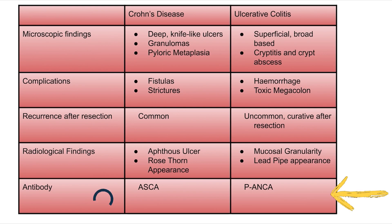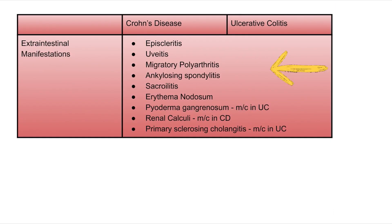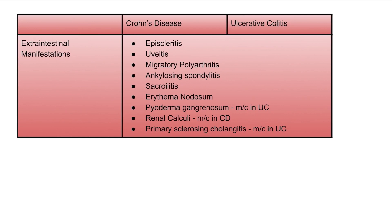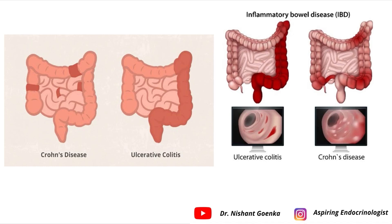Antibodies are another potential exam question: in Crohn's disease it is ASCA, and in ulcerative colitis it is pANCA. pANCA can also be found in Crohn's disease but at a very low percentage. Extra-intestinal manifestations common to both include episcleritis, uveitis, migratory polyarthritis, ankylosing spondylitis, sacroiliitis, erythema nodosum. Pyoderma gangrenosum is more common in ulcerative colitis, renal calculi in Crohn's disease, and primary sclerosing cholangitis is most often associated with ulcerative colitis.